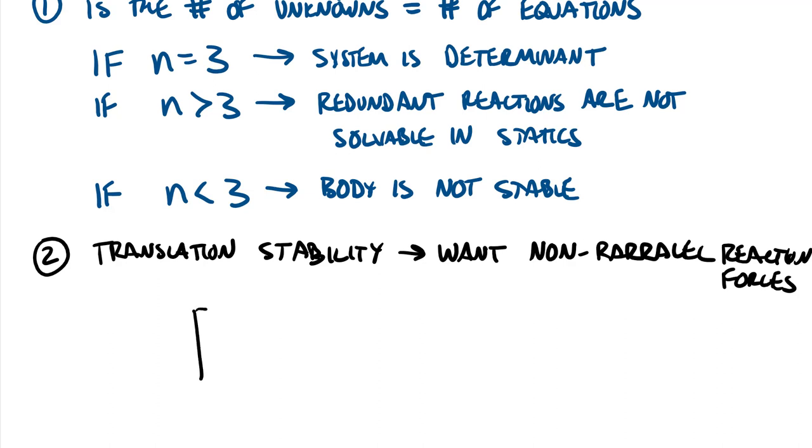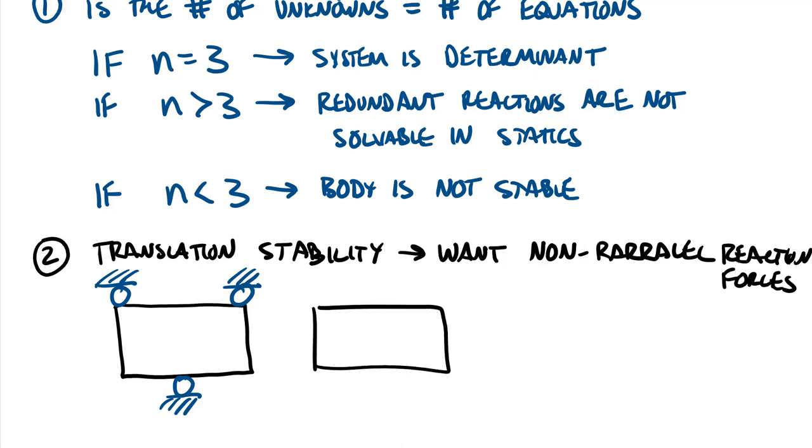So let's go ahead and do a little diagram here, contrasting. So if we had a body which was supported by a roller, a roller, and another roller, creating a free body diagram of that system, of course, would look like this. Here is our body. Here is our three reaction forces. All those are parallel. That would be bad.